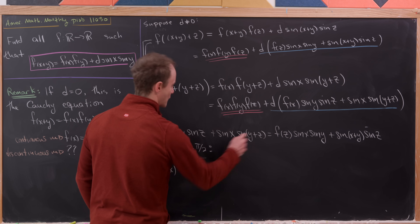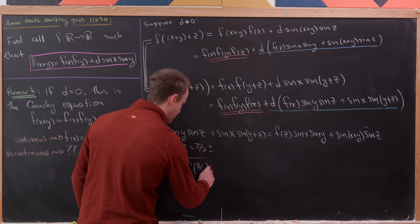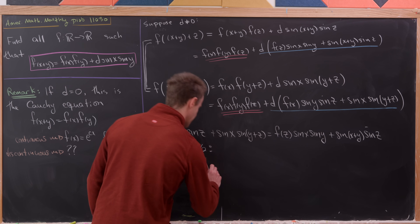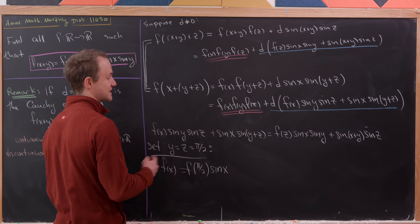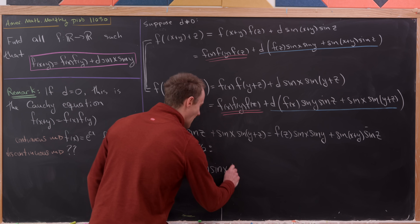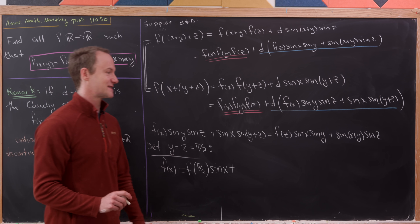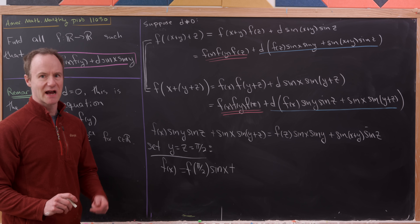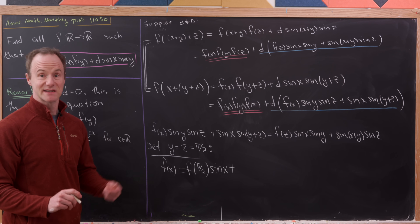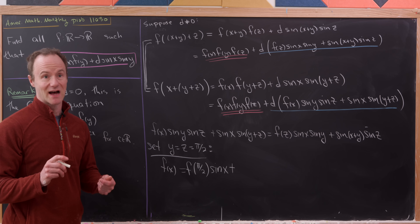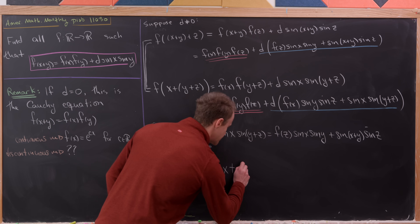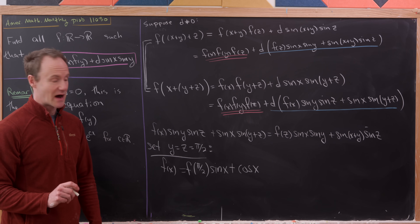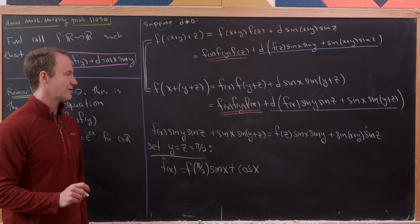On the right-hand side, we get f(π/2)·sin(x)·sin(π/2) = f(π/2)·sin(x), plus sin(x + π/2)·sin(π/2). Since sin(x + π/2) = cos(x) and sin(π/2) = 1, we're left with f(x) = f(π/2)·sin(x) + cos(x).